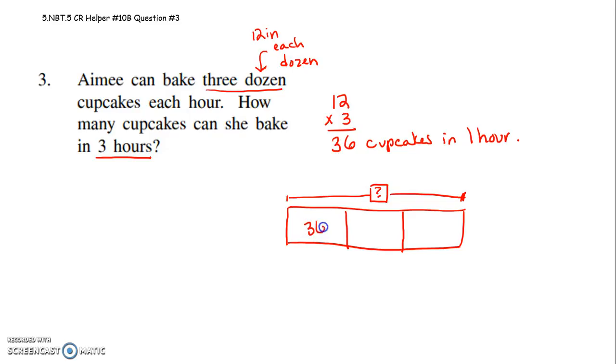she can bake 36 cupcakes that first hour, 36 cupcakes that second hour, 36 cupcakes that third hour. So what's the total she bakes in those 3 hours? You would then do 36 times 3.